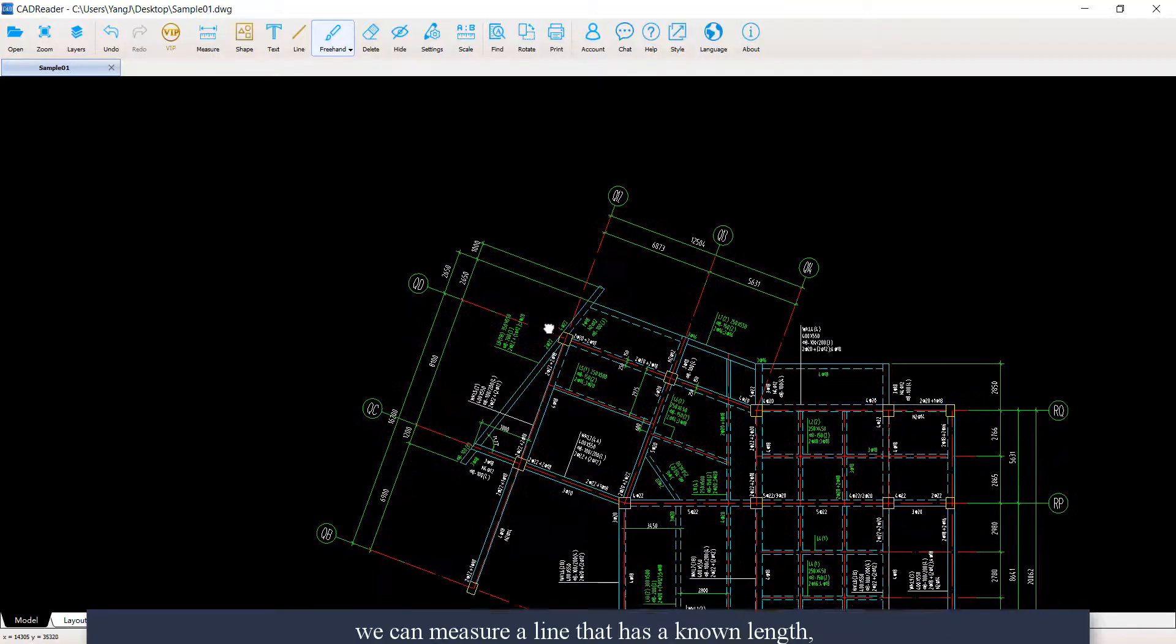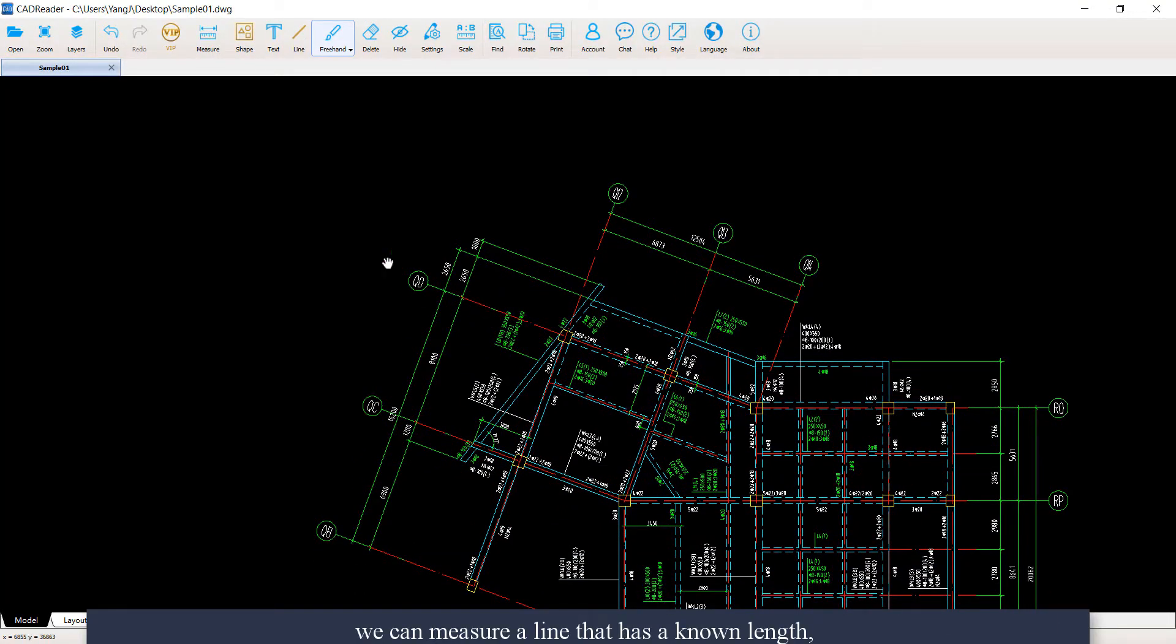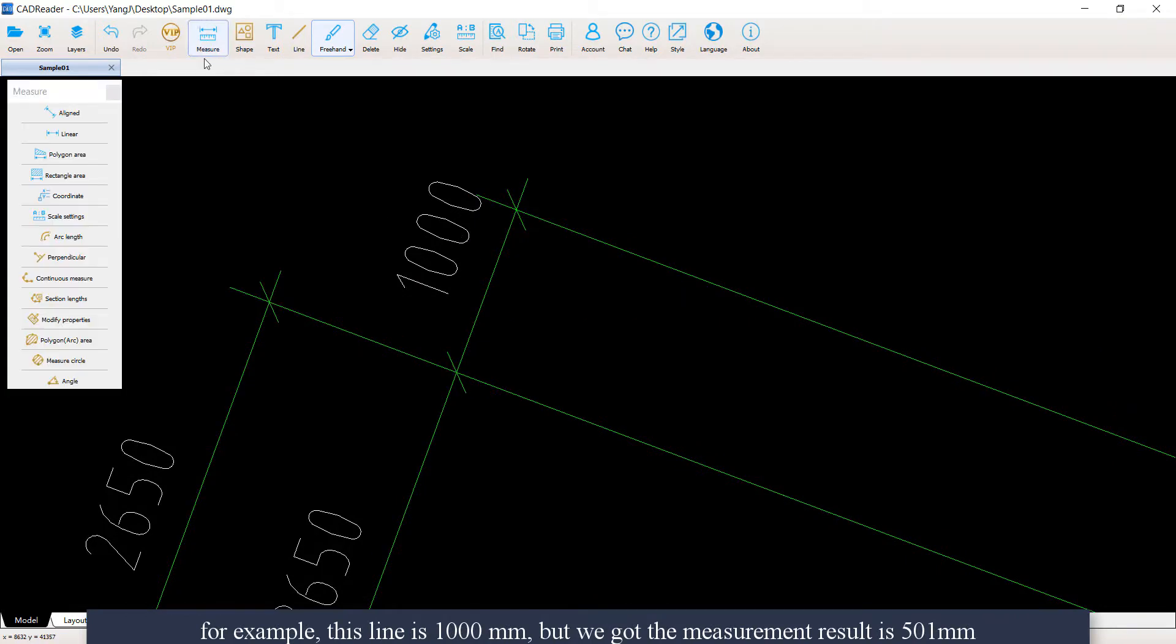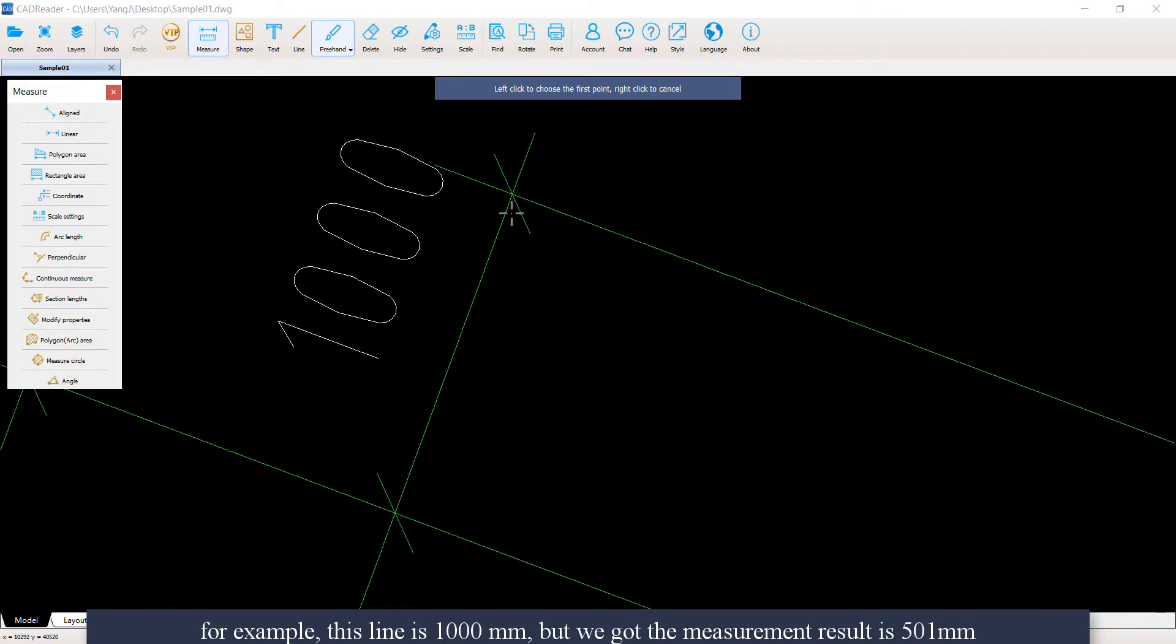First, open a drawing in CAD reader. We can measure a line that has a known length. For example, this line is 1000 mm, but we got the measurement result is 500 mm, which means the scale is incorrect.